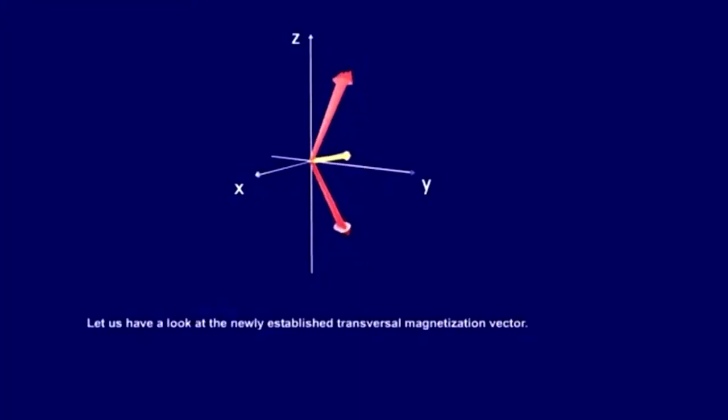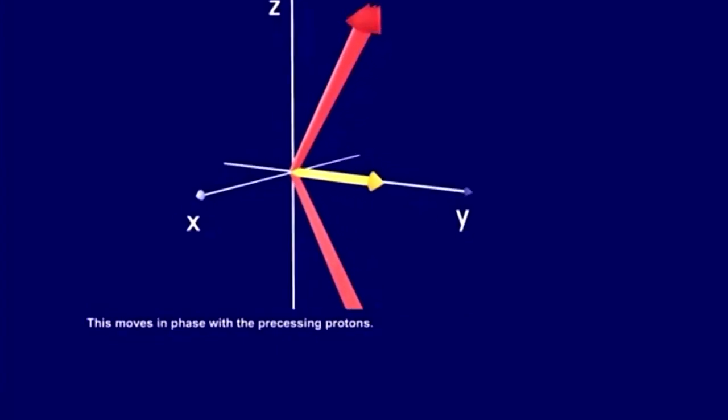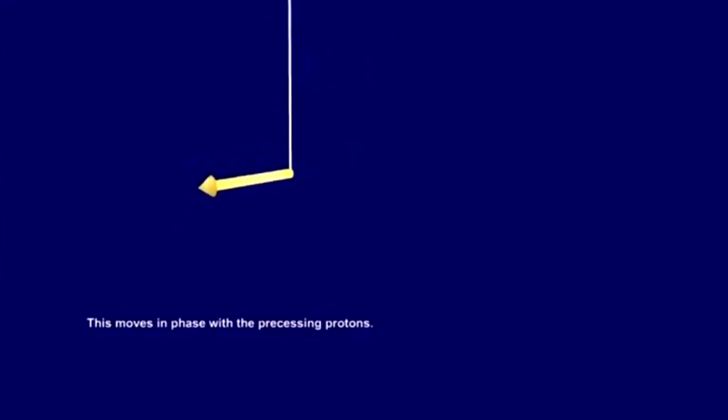Let's have a look at the newly established transversal magnetization vector. This moves in phase with the precessing protons. The new magnetic vector comes towards you, goes away from you, comes again towards you, and so on.